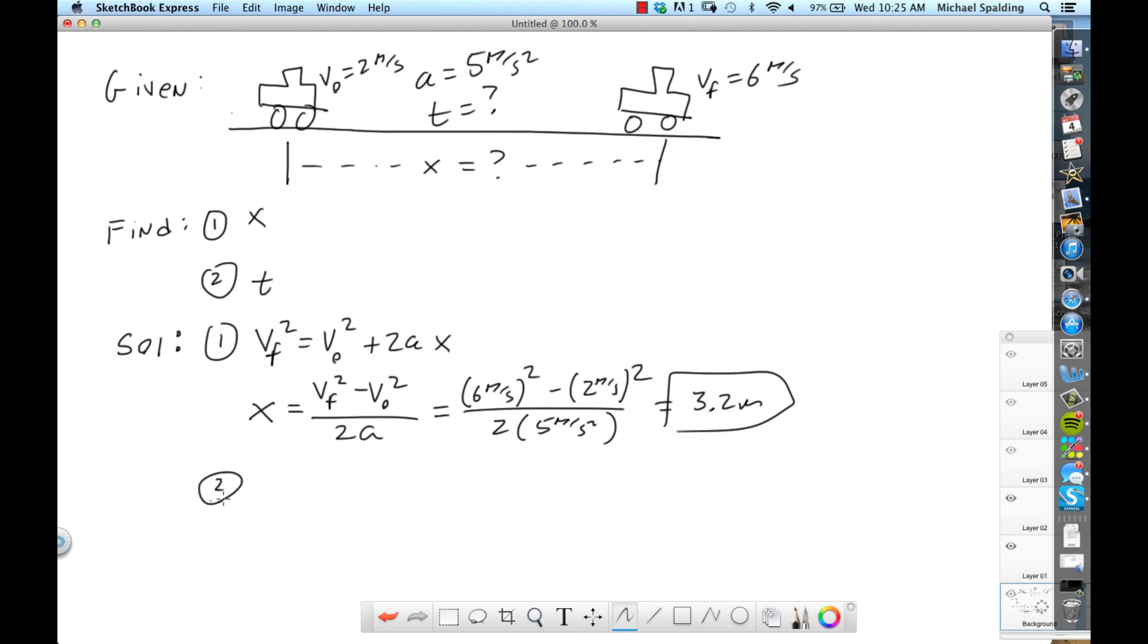All right. Second question, finding the time. We could just do VF equals V initial plus AT. And then do the algebra. T equals V final minus V initial over A. Then plug your numbers in. 6 meters per second minus 2 meters per second over 5 meters per second squared. So that's going to be 4 over 5, 0.8 seconds.